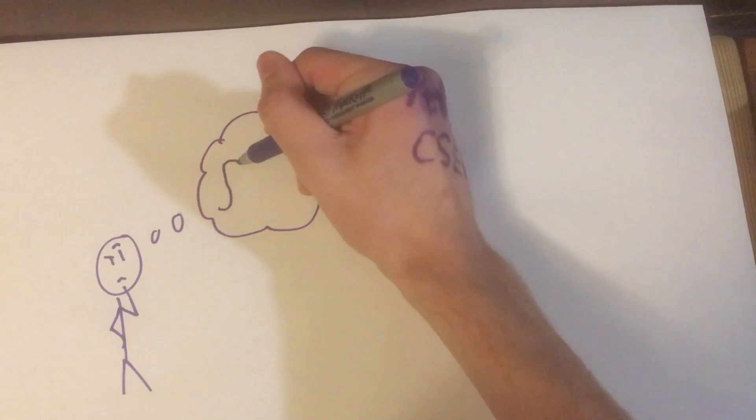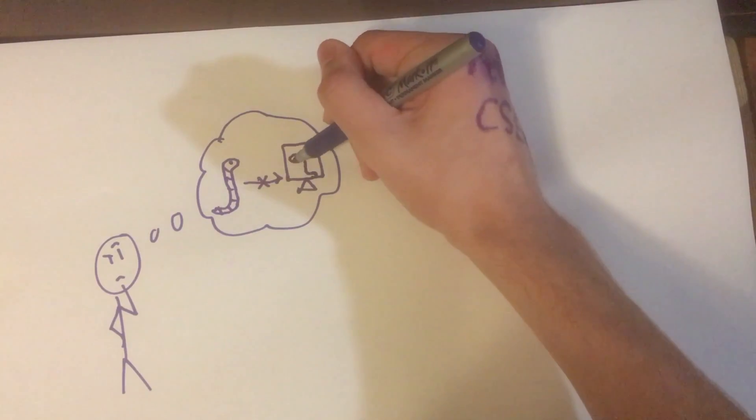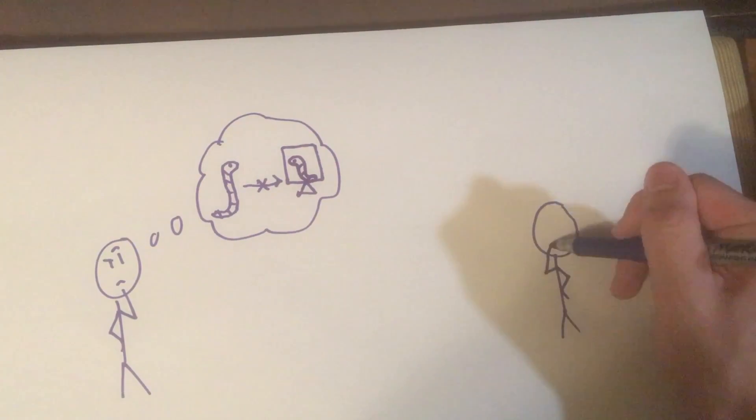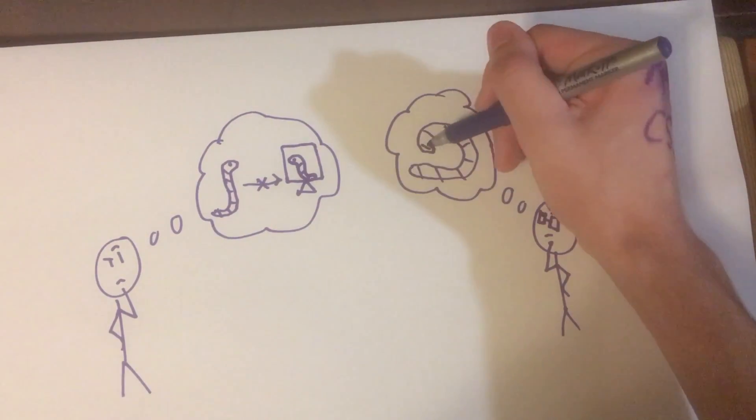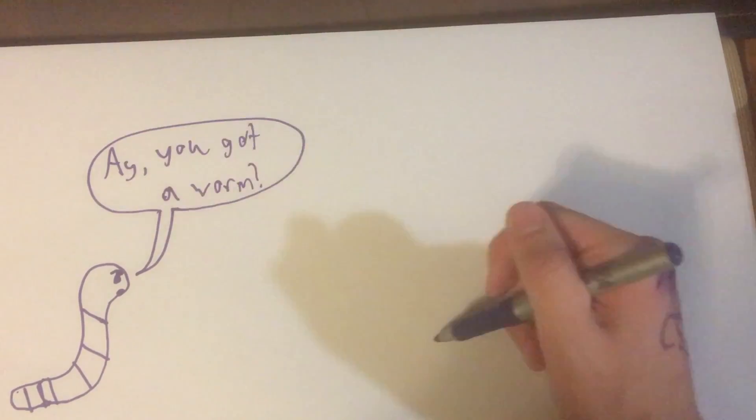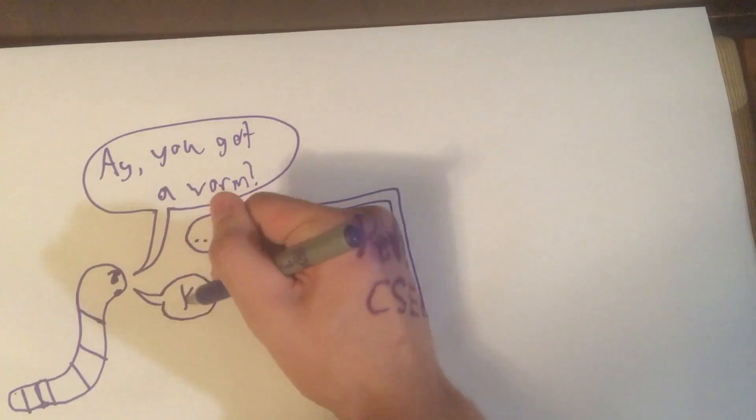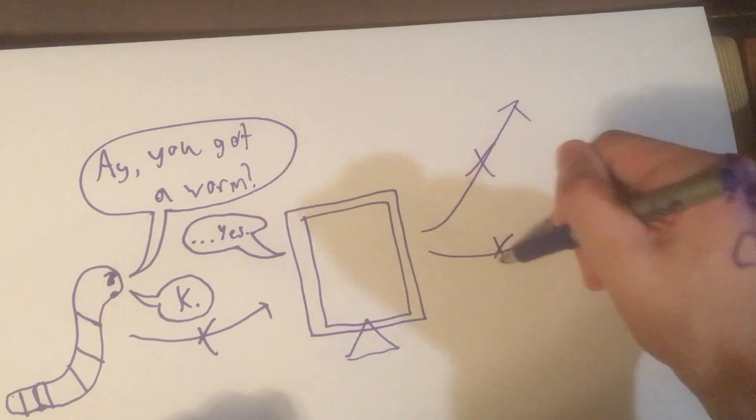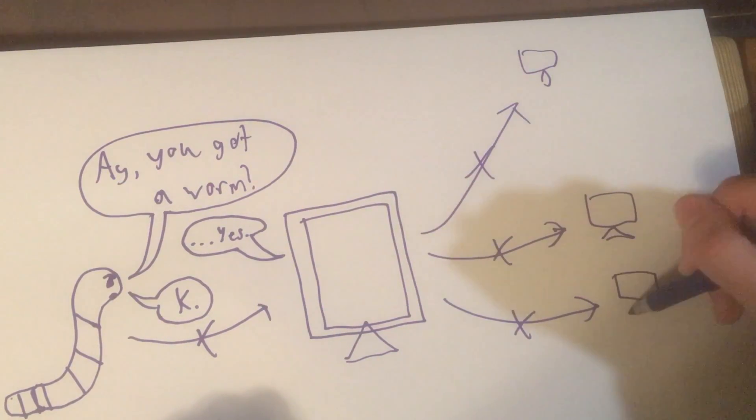You see, one would think that it would make sense for the worm to leave computers it had already infected alone, but Morris was concerned that this would make the worm trivially easy to kill. People could just run processes that would tell the worm that their computers already had it installed, preventing the worm from spreading through their computers, and thus preventing the spread of the worm altogether.